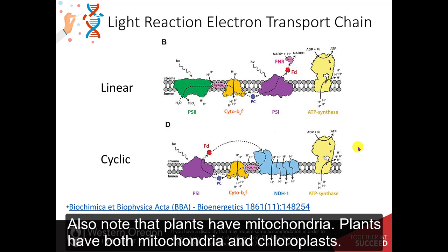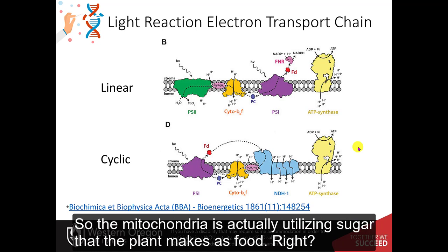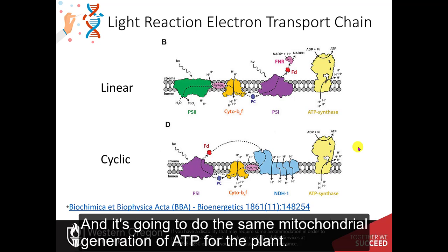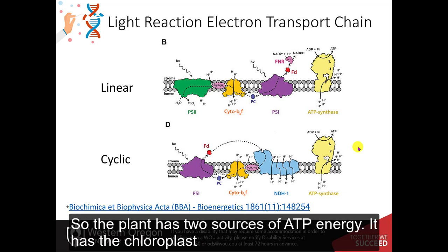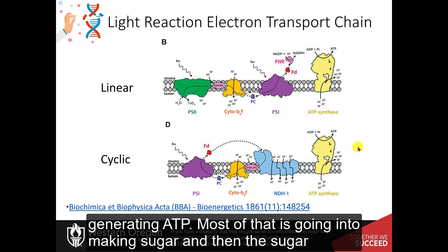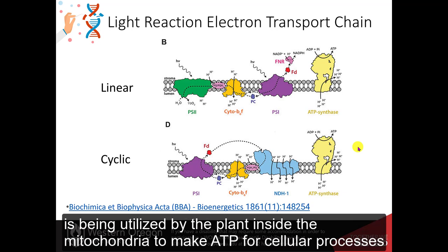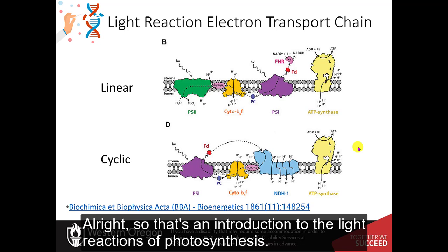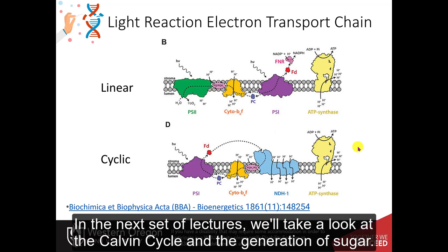It's also worth noting that plants have both mitochondria and chloroplasts. The mitochondria utilize the sugar the plant makes as food and carry out the same mitochondrial generation of ATP. So the plant has two sources of ATP energy: the chloroplast generating ATP — most of which goes toward making sugar — and then that sugar is utilized by the plant inside the mitochondria to make ATP for cellular processes. That's an introduction to the light reactions of photosynthesis. In the next set of lectures, we'll take a look at the Calvin cycle and the generation of sugar.